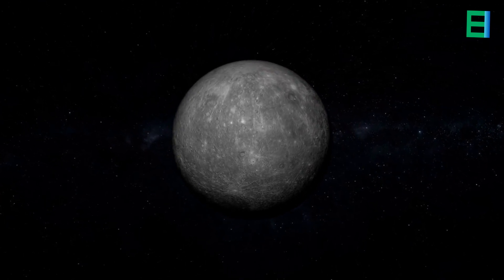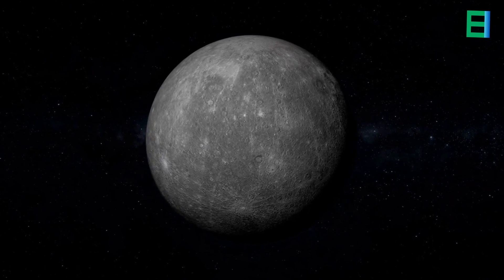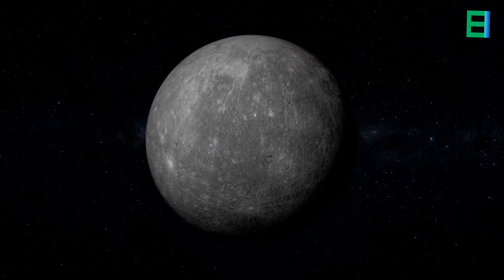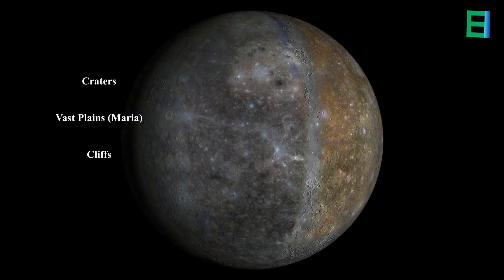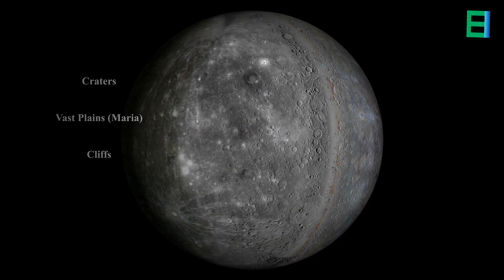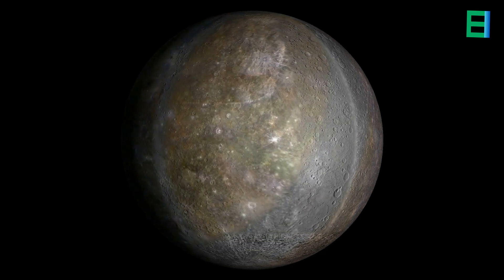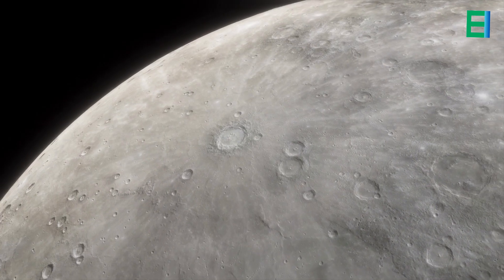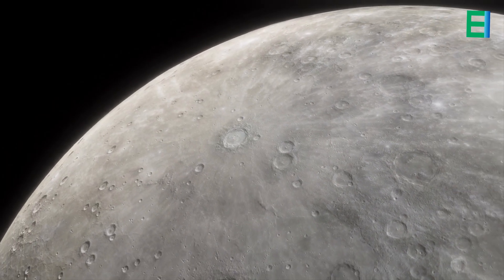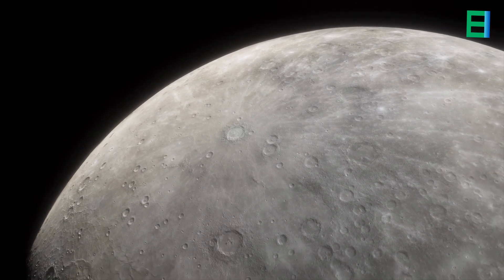Mercury possesses a surface that is both fascinating and intriguing. It bears the scars of a tumultuous cosmic history marked by numerous impact craters, vast plains, and towering cliffs. Craters, the most prominent feature on Mercury's surface, serve as testament to the relentless bombardment the planet has endured over billions of years.